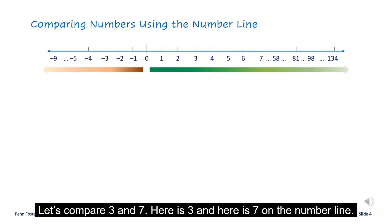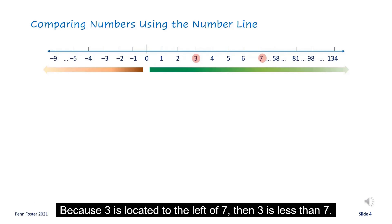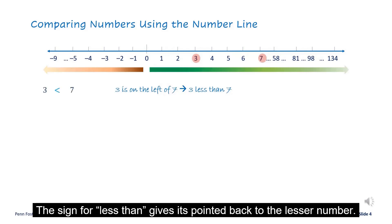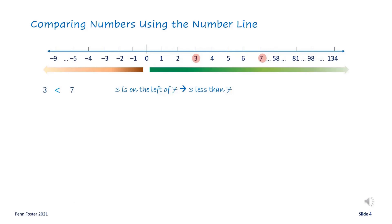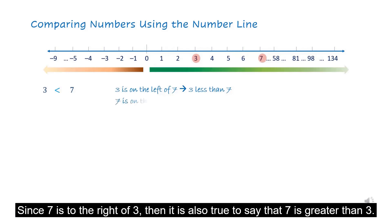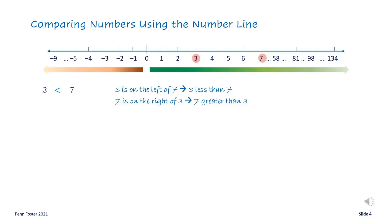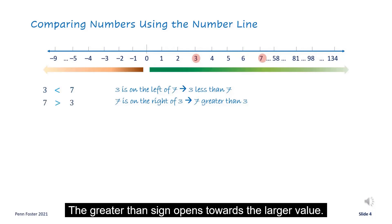The relative position of two whole numbers on the number line tells which one is greater or less than the other. Let's compare 3 and 7. Here's 3, and here's 7 on the number line. Because 3 is located to the left of 7, then 3 is less than 7. The less-than sign points back to the lesser number. Since 7 is to the right of 3, it's also true to say that 7 is greater than 3. The greater-than sign opens towards the larger value.